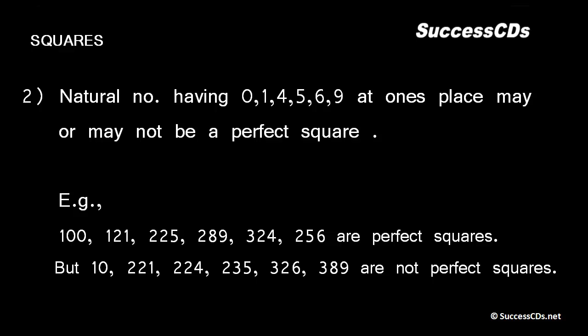But when we look at numbers 10, 121, 224, 235, 326, and 389, these have their end digits as 0, 1, 4, 5, 6, or 9, but these are not perfect squares.